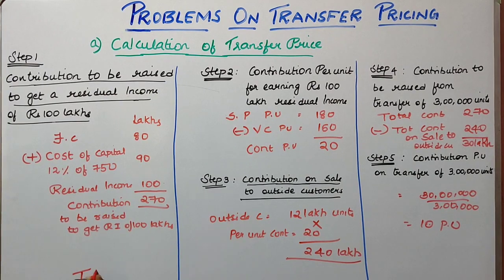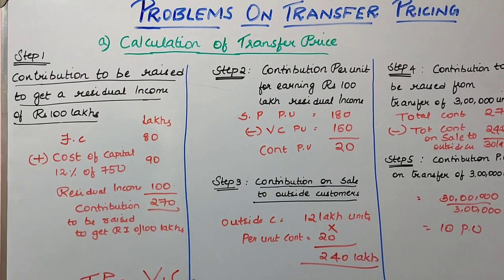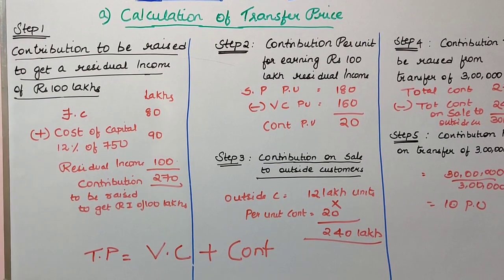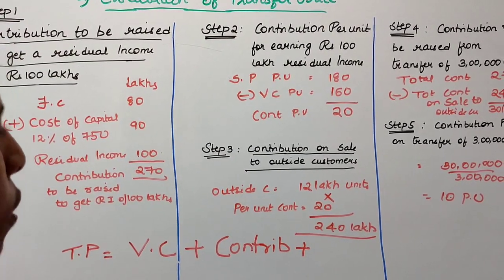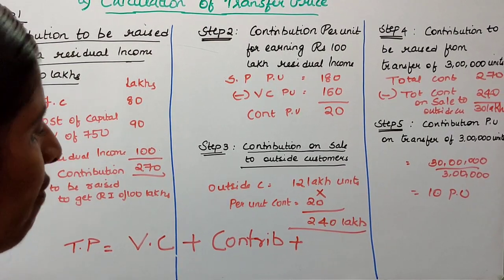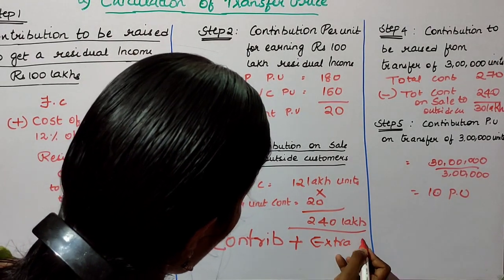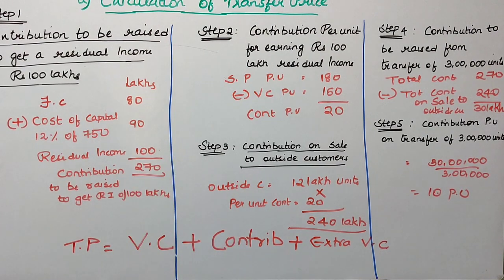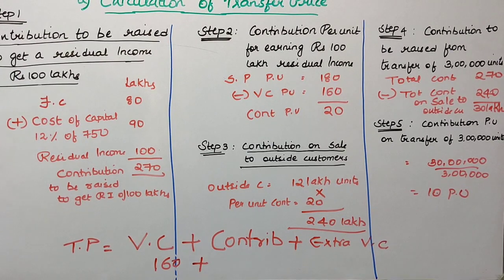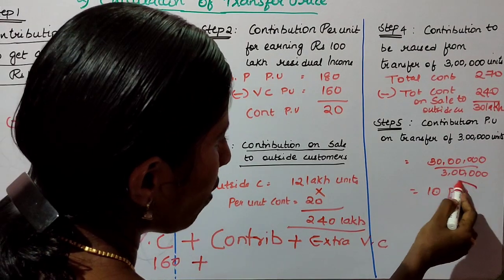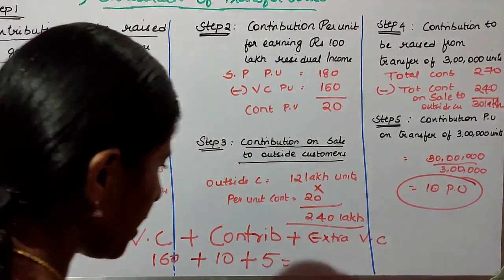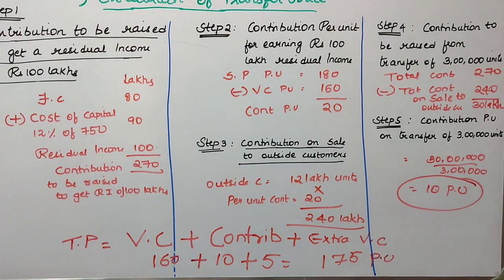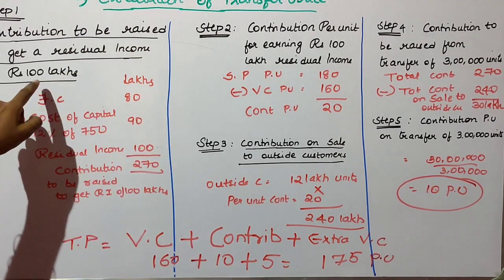The transfer price is calculated as: variable cost (160) plus contribution to earn residual income (10) plus extra variable cost for transfer (5) = 175 per unit. So Alpha should charge Beta a transfer price of rupees 175 per unit to earn a residual income of 100 lakhs.